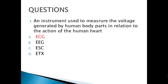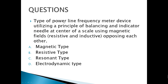The ECG is the instrument we see in movies where if there is no heartbeat, it will show a straight line. Next, we have a type of power line frequency meter device utilizing the principle of balancing an indicator needle at the center of a scale using magnetic fields — resistive and inductive opposing each other.